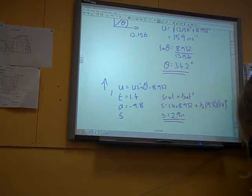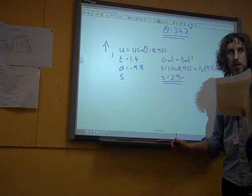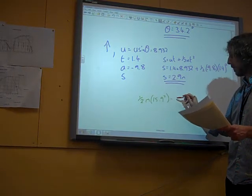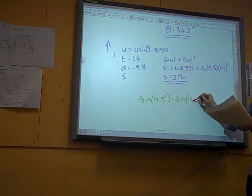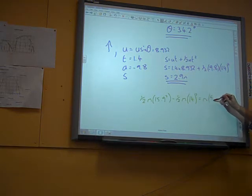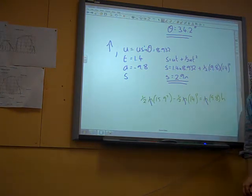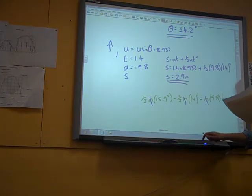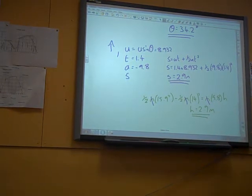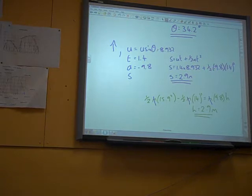It is perhaps worth pointing out that you could also have said that my loss in kinetic energy, a half m times 15.9 squared minus a half m times 14 squared, must equal the gain in gravitational potential energy which is m times 9.8 times h. Using the fact that m cancels out all the way along, you solve that to get h equals 2.9 in the same way. I think that's probably just as good a way of doing it.